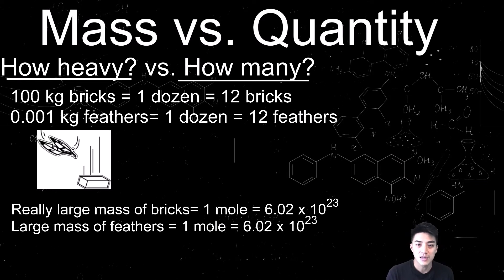If this idea of mass versus quantity, how heavy versus how many, is still giving you trouble, just think of it in simple terms like bricks and feathers. So for example, if I have 12 bricks, that means I have a dozen bricks. And a dozen bricks might weigh 100 kilograms. On the other hand, if I have 12 feathers, I still have a dozen feathers, but the mass might be way less. It might be like 0.001 kilograms.